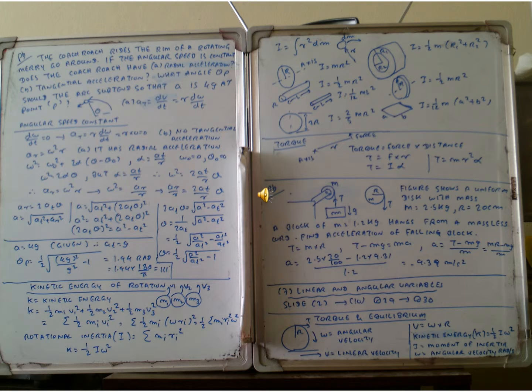The coach that rides the ring of the rodent in the radius of 60 around. If the angular speed is constant, does the coach have the radial acceleration, tangential acceleration, or does the algorithm change the string of the bar?